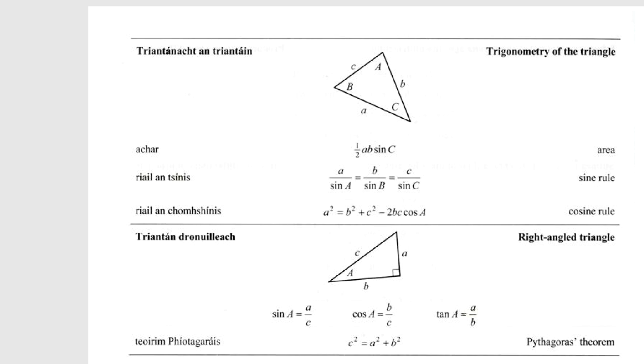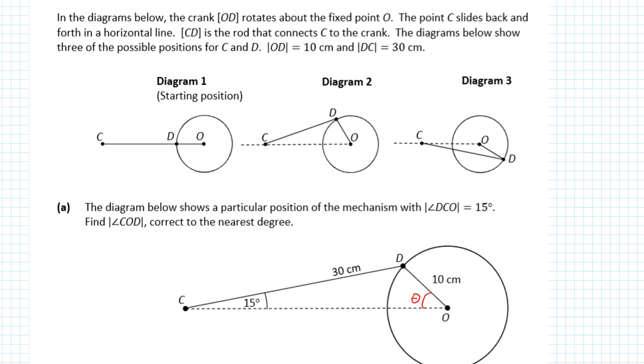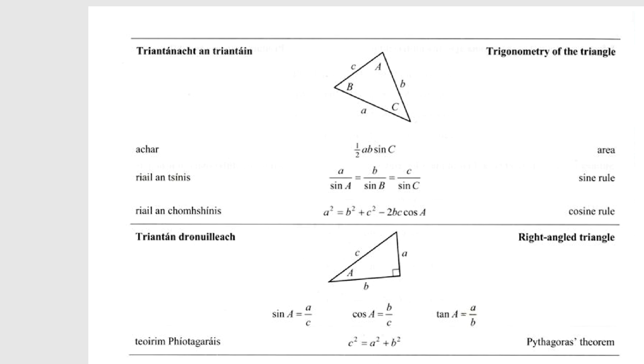If it's a right-angled triangle, you only use these rules. If it's a non-right-angled triangle, you only use these rules. Looking at it, is it a right-angled triangle? No. So the only rules we can use are the area, sine rule, or cosine rule.